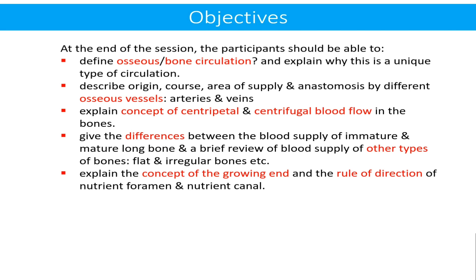This is the third lecture of this series about the skeleton. At the end of this session, the participant should be able to define osseous or bone circulation and explain why this is a unique type of circulation. Describe the origin, course, area of supply, and anastomosis by different osseous vessels — that is arteries and veins — and explain the concept of centripetal and centrifugal blood flow in bone supply. Give differences between blood supply of immature and mature long bones and a brief review of blood supply of other types of bones such as flat and irregular bones.